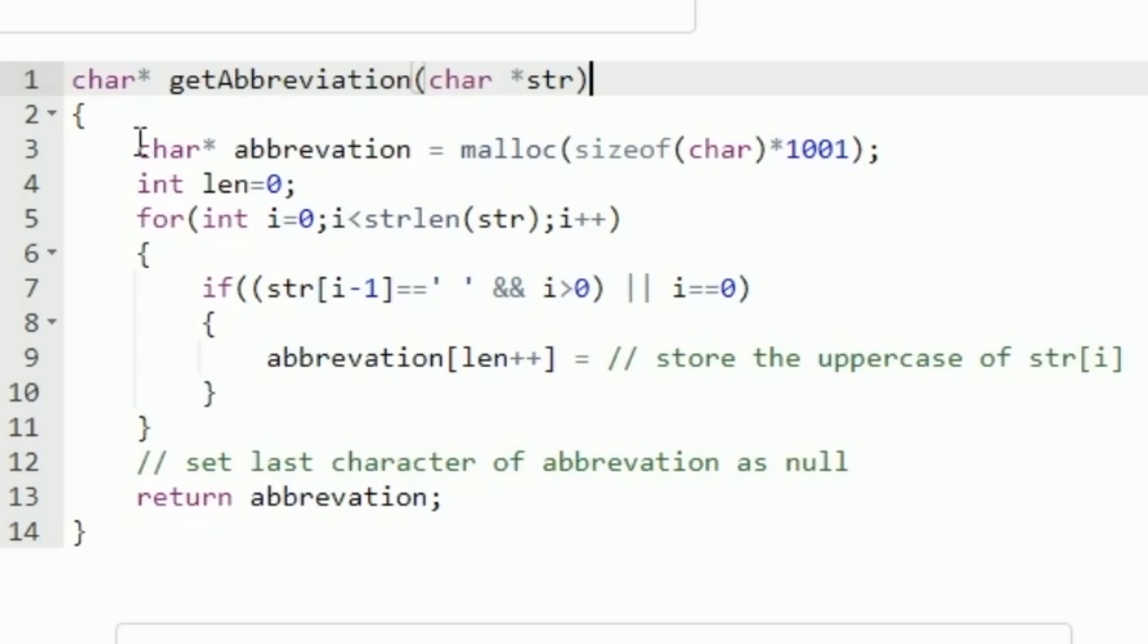Our task is to find the abbreviation of the string str. I am creating a character pointer named abbreviation and using the malloc function we are going to allocate memory to it. Within the arguments of malloc we are giving sizeof(char) * 1001, so we can store up to 1001 characters. Next I am creating another integer variable named len and setting it to 0 initially.